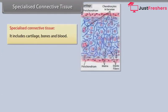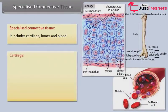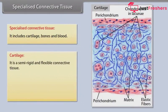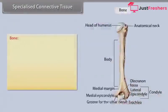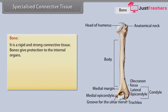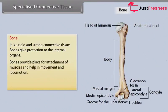Specialized connective tissue includes cartilage, bones, and blood. Cartilage is a semi-rigid and flexible connective tissue; its matrix is solid, flexible, and resists compression. The cells, called chondrocytes, are bluntly angular and occur in clusters of 2 or 3 in each lacuna in the matrix. Bone is a rigid and strong connective tissue that gives protection to internal organs, provides place for attachment of muscles, and helps in movement and locomotion.